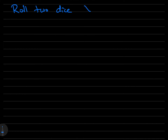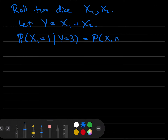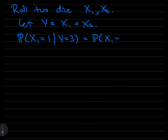Let's say we're going to roll two dice. X1 and X2 are going to be their values, and let's define Y to be the sum of the two dice. We can first ask the question: what's the probability that the first die had a one given that the sum is three? The only way for the first die to have a one and the sum to be three means the second die was a two. So the probability of this event is the probability that X1 equals one and X2 equals two, divided by the probability Y equals three.